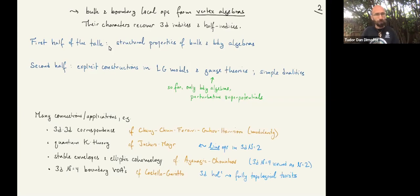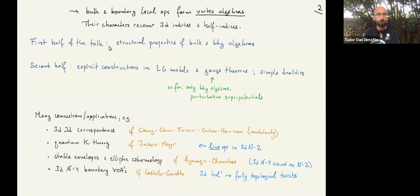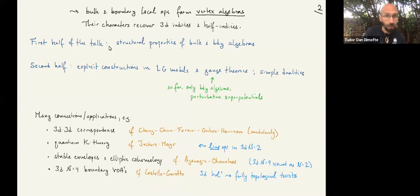There are many connections to other topics of recent discussion and interest. These sorts of 3d N=2 theories are central in the 3d-3d correspondence. In particular, the modularity observations in recent work by Cheng, Chen, Ferrari, Gukov, and Harrison have to do with characters of these boundary vertex algebras. The vertex algebras themselves have shown up in relation to 3- and 4-manifolds, though typically the theories there are much fancier than Lagrangian gauge theories.